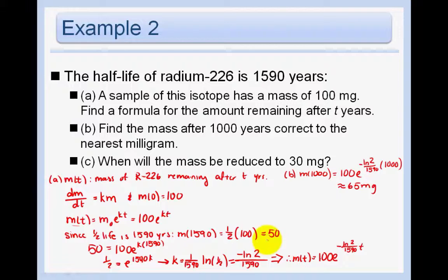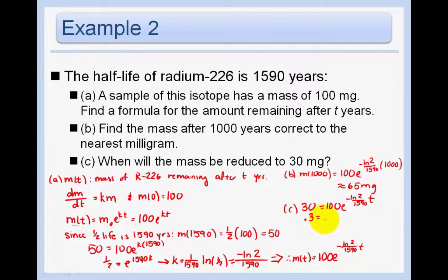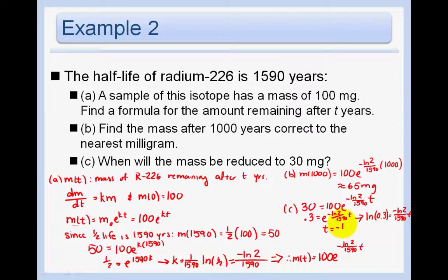In part c, when will the mass be reduced to 30 milligrams? We set 30 = 100e^(kt) and divide by 100 to get 0.3 = e^(kt). Taking the ln of both sides and solving: t = −ln(0.3) × 1590 / ln(2), which is about 2,762 years.